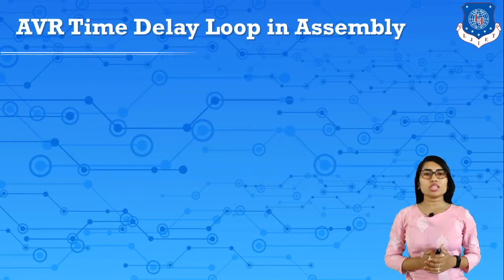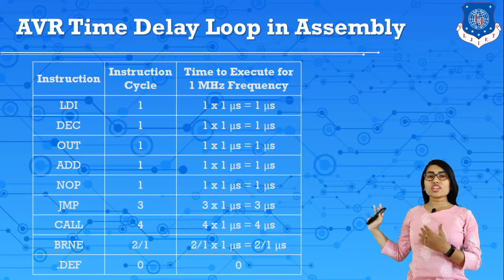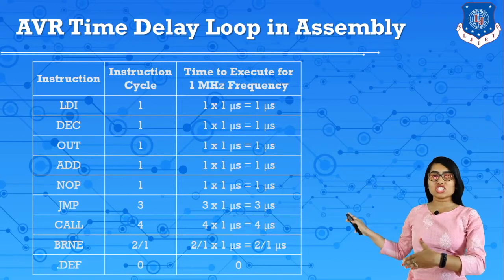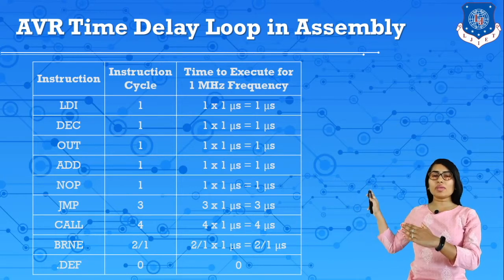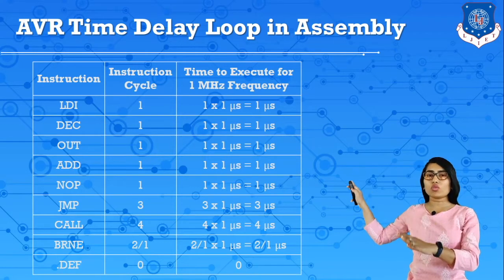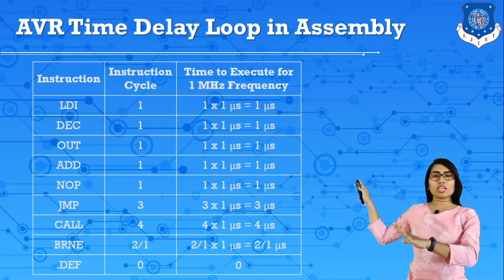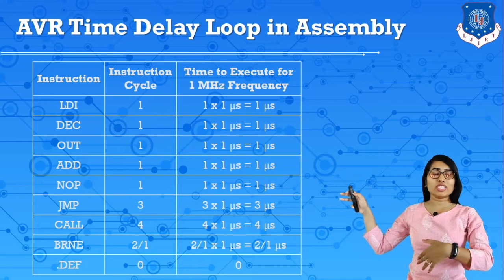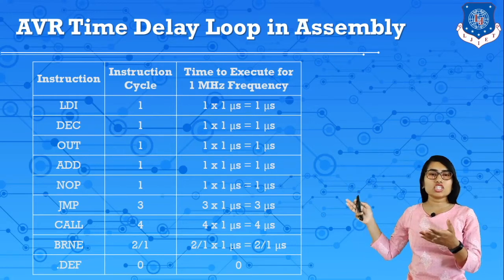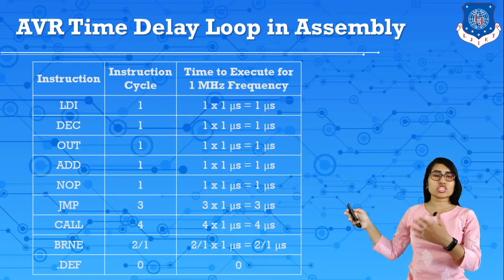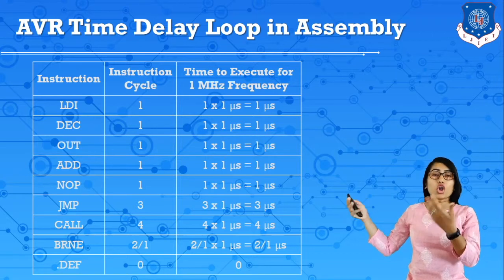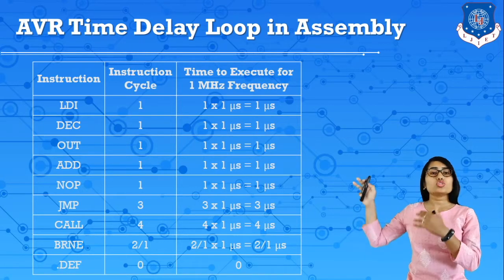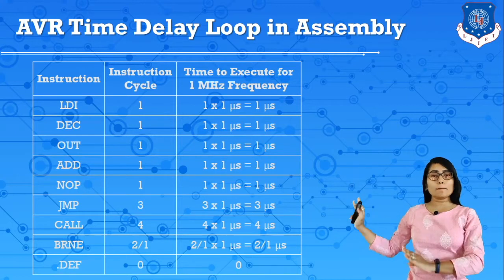Here we have a time delay loop calculation table for each instruction, showing the required number of instruction cycles. With a 1 MHz clock frequency given, the time required to execute each instruction is also shown. We have data transfer instructions, data manipulation instructions like arithmetic and logical instructions, then branch instructions, jump instructions, call instructions, conditional branch instructions, and pseudo instructions. Each instruction requires some machine cycles.